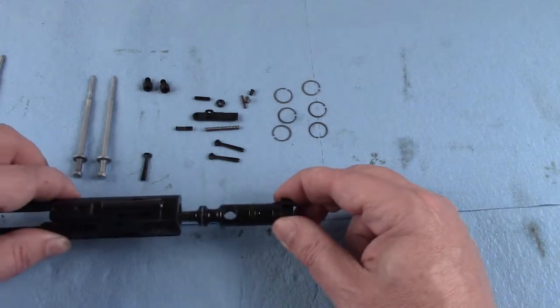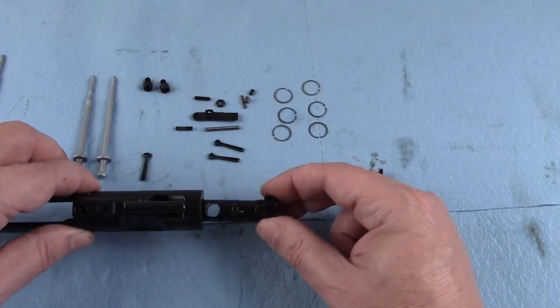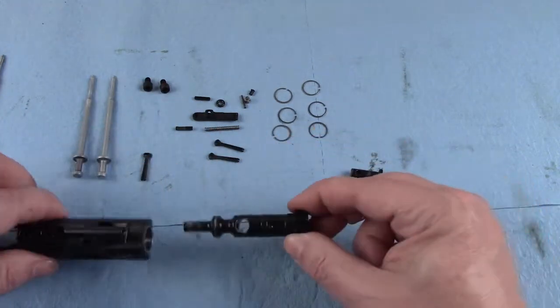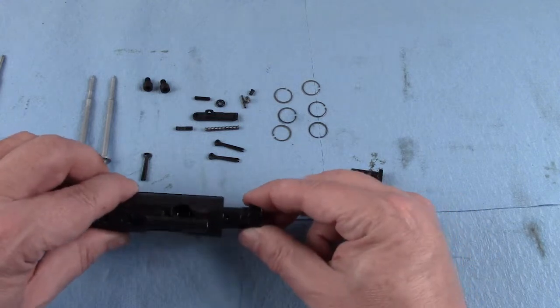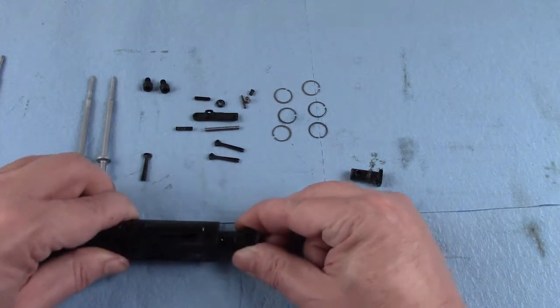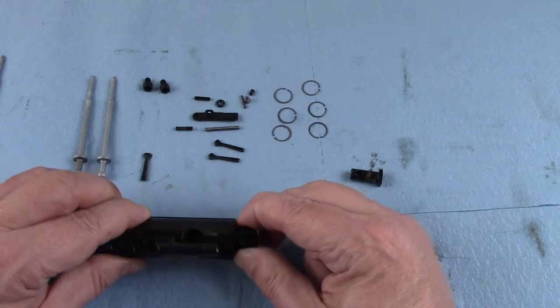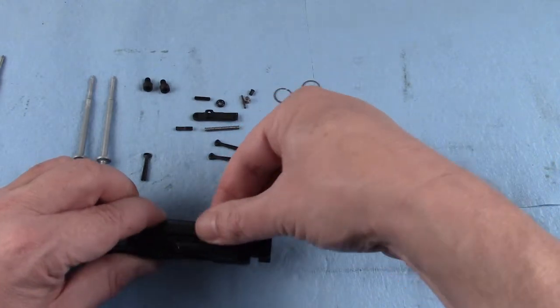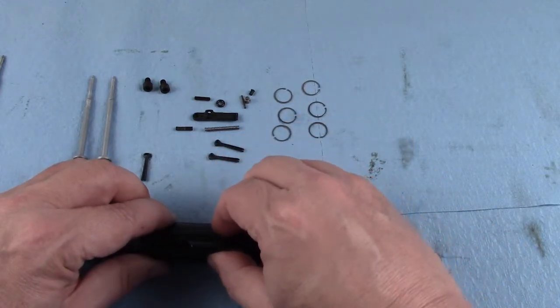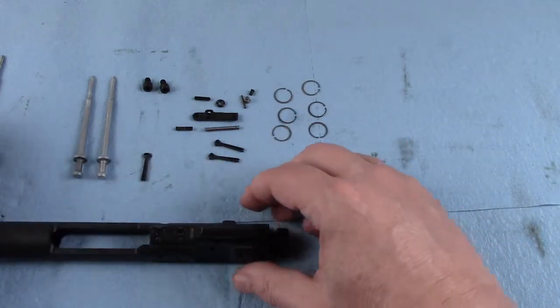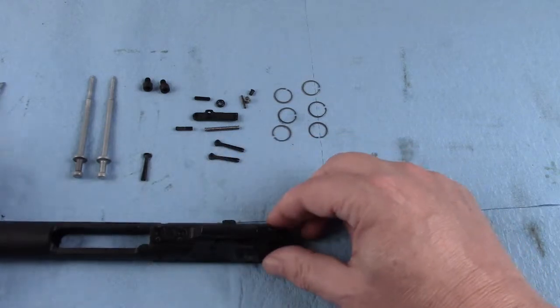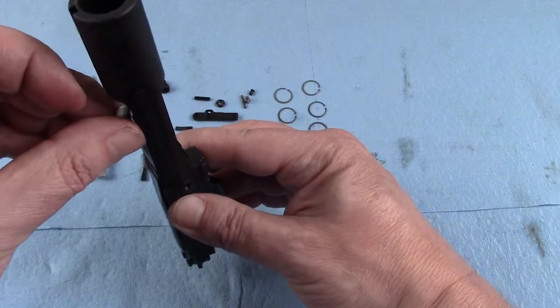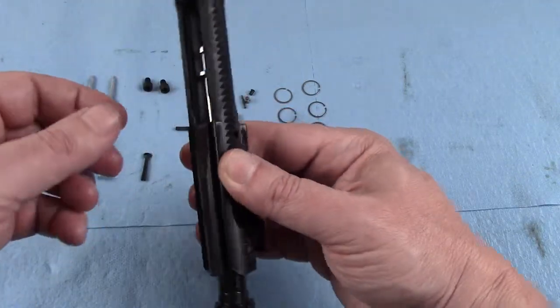To reassemble it, it's pretty easy. Line this up like so. Just make sure that the extractor is pointed in the correct way, and you will see that this will line up like so. I drop this guy in. Rotate it. Next thing that I'm going to do is I'm just going to go ahead and come forward on this. That will help me to drop in the firing pin.